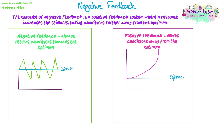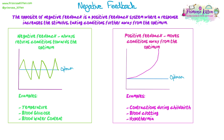Negative feedback examples include temperature, blood glucose, and water content. Positive feedback examples - rarer but they exist - include contractions during childbirth. The baby's head pushing on the cervix causes the release of oxytocin, which causes contractions; the contractions cause the baby to push more against the cervix, releasing more oxytocin, and we get more and more contractions until the baby is born. Blood clotting is another example: when cells send out signals to clot, more cells are stimulated to send out more blood clotting factors until the clot is formed.